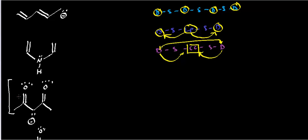So here's a double bond, then single, lone pair, single, double. Does that look like anything we have in our rules? Sure — it looks like the second one: double, single, lone pair, single, double. That means these are in resonance with each other. The question is how?